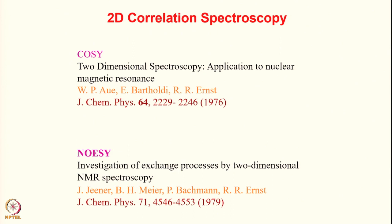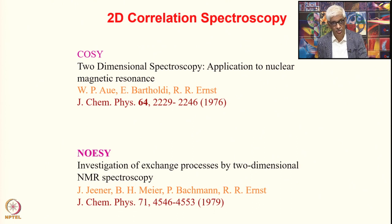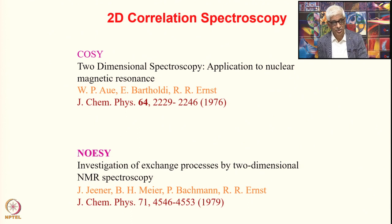We are now ready to go into the next class of 2-dimensional experiments, or in general multidimensional experiments. These are called correlation experiments, or correlation spectroscopy — 2D correlation spectroscopy. This has been the most fundamental, most crucial experiment from the point of view of structural biology. It led to the Nobel Prize to two persons: Richard Ernst and Kurt Wüthrich. The basic developments were made by Richard Ernst, first published in 1976 in the Journal of Chemical Physics and again in 1979 — two fundamental experiments crucial in all applications in structural biology.